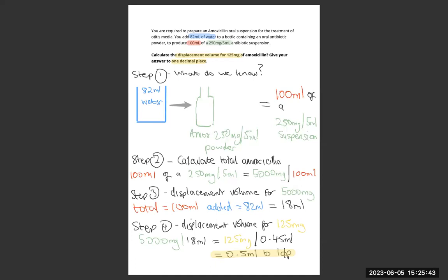So if it's 5000 milligrams per 18 millilitres, it'll be 125 milligrams — which is what the question is asking for — per 0.45 millilitres. That is to two decimal places. However, we need one decimal place. Therefore our answer is 0.5 mils.